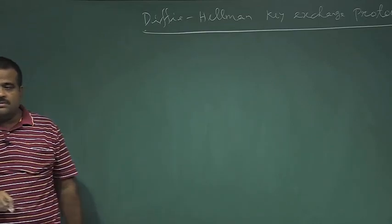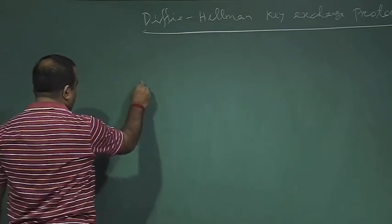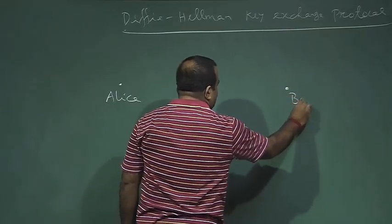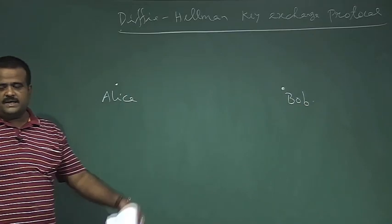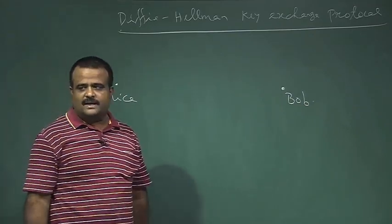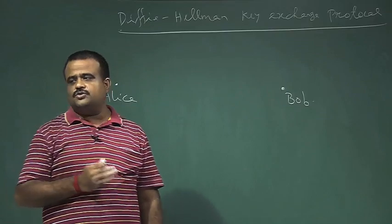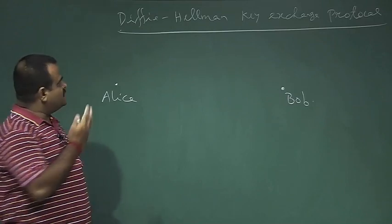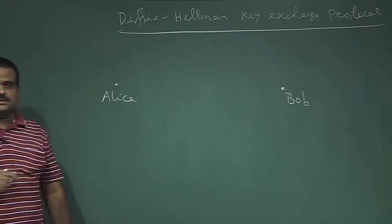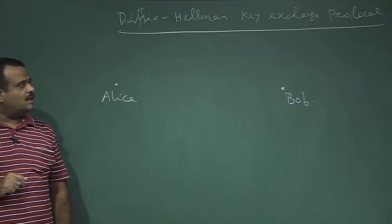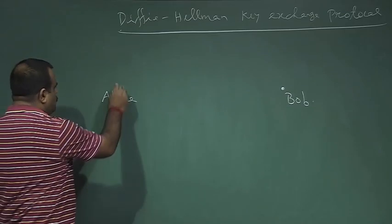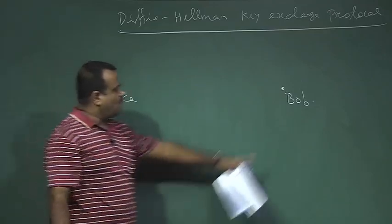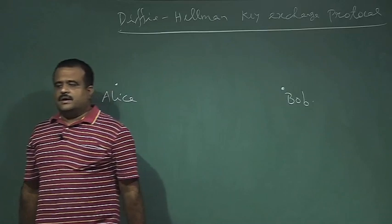The Diffie-Hellman key exchange protocol is a way for two parties sitting in different places — say Alice in America and Bob in New Delhi — to agree on a common key k, which can then be used for symmetric key encryption. To solve this problem, Diffie-Hellman suggested this key exchange protocol.